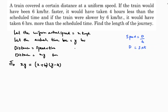For Case 2: if the train was slower by 6 km per hour, it would have taken 6 hours more. So distance equals (x - 6) into (y + 6). Speed is decreased by 6, and time will be 6 hours more. These are the two cases.